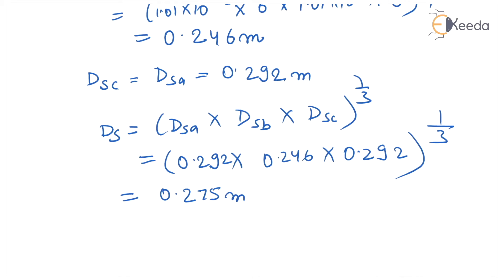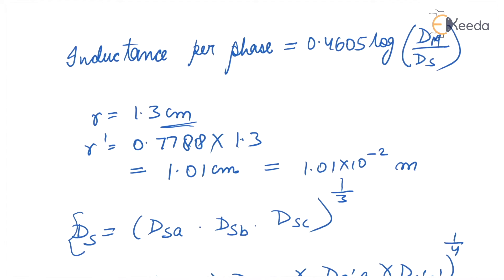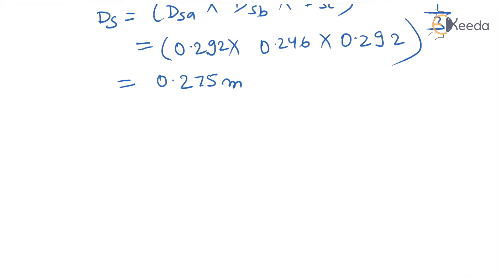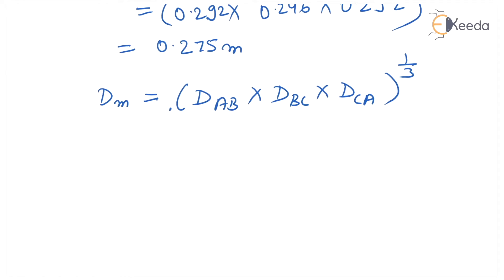This equals 0.275 metres. Now we have to find out Dm, the mutual GMD. Dm equals (Dab × Dbc × Dca) to the power 1 by 3. Now we have to find out Dab, Dbc, and Dca.